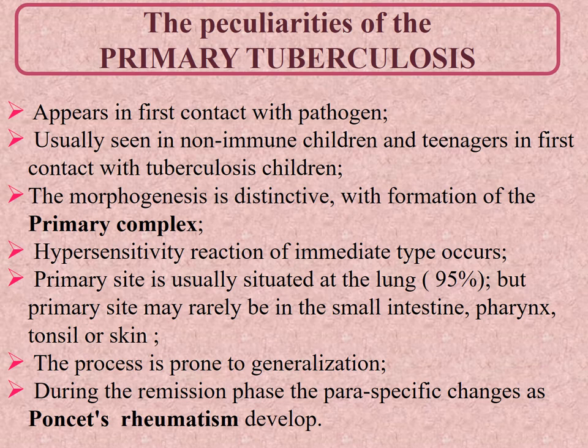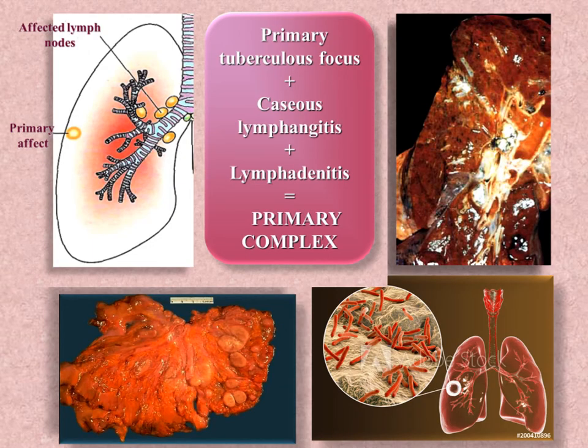A hypersensitivity reaction of immediate type occurs with development of the exudative and necrotic process at the involved site. The process is prone to generalization. During the remission phase, paraspecific changes resembling rheumatism (Poncet's disease) develop. Microscopically, the primary complex (Ghon complex) is seen, which consists of three components.